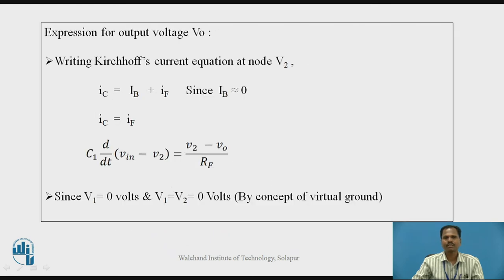We can verify the working of this basic differentiator by deriving the equation for output voltage. Writing Kirchhoff's current equation at node V2: the current flowing through capacitor IC equals IB plus IF, where IF is the current flowing through feedback resistor RF. Since the input bias current IB is approximately zero, the capacitor current IC equals the feedback current IF. So current flowing through capacitor C1 flows through feedback resistor RF.